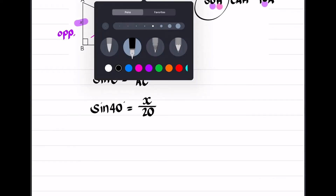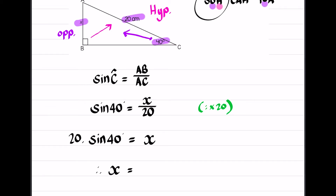I want to solve for x, which means I need to get rid of the denominator 20. Since it's being divided by 20, I multiply both sides by 20. So I have 20 times sine 40 on the left, which equals x. Typing 20 × sin(40°) into my calculator gives 12.86. Looking at the units on the diagram — x is 12.86 centimeters.